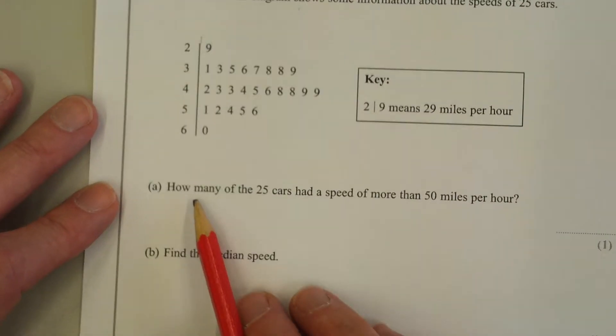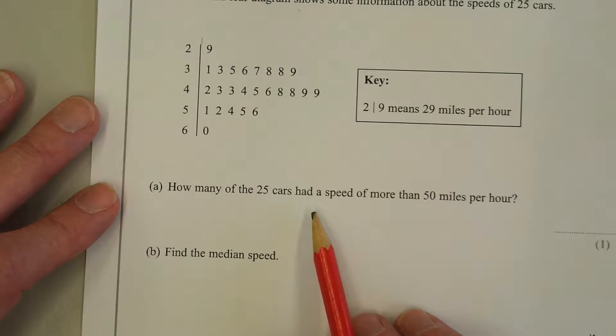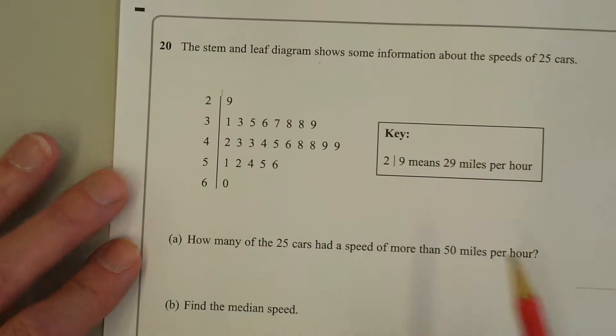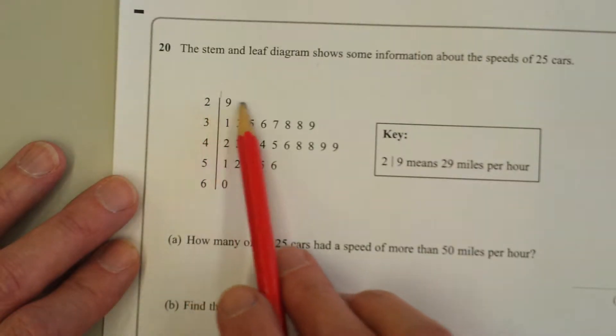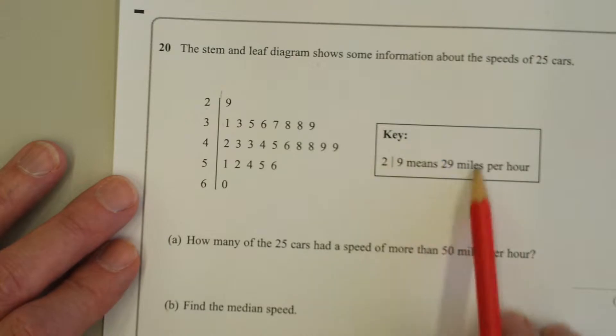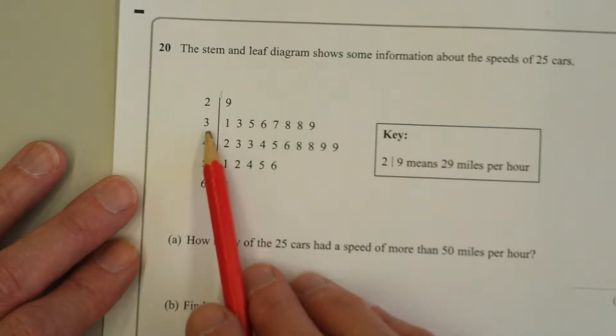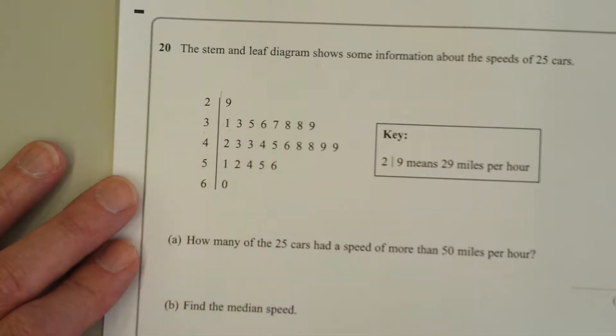Part A: How many of the 25 cars had a speed of more than 50 miles per hour? Let's look at the numbers on the table. First one, 2 line 9, means 29 from the key. 3 line 1 is 31, 3 line 3 is 33, and so on.